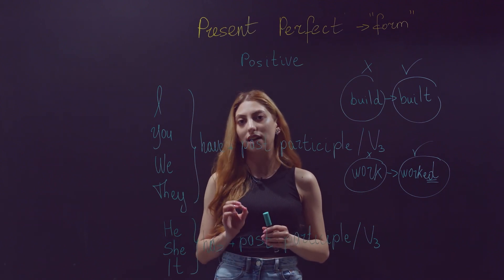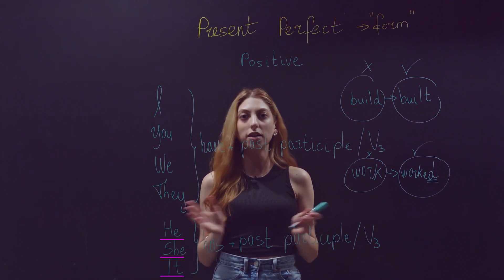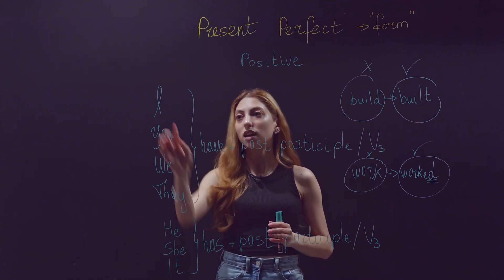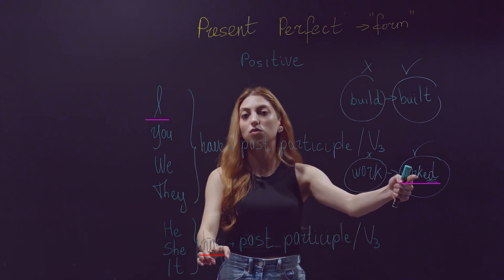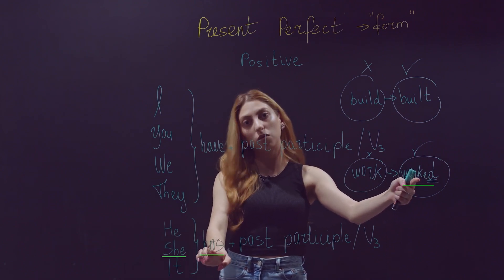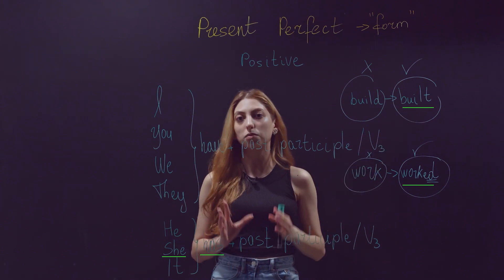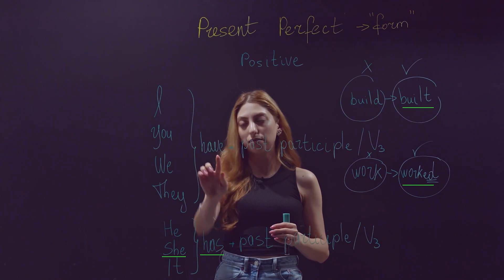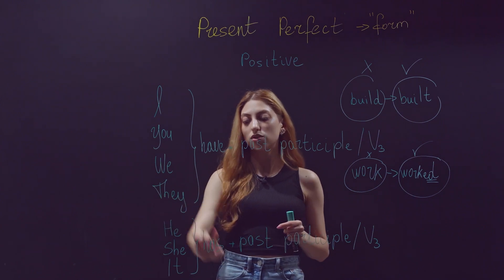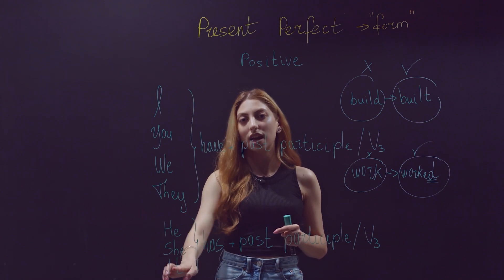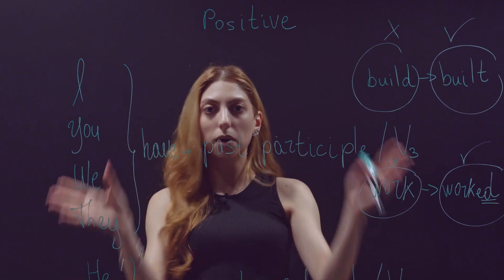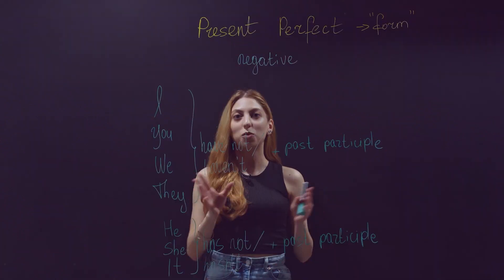We need to remember that we can use 'has' only with 'he', 'she', and 'it' — this is the rule and we must follow it. I can never say 'I has worked' — that is wrong. I need to say 'I have worked', or 'she has worked', or 'she has built'. We use 'have' with: I, you, we, they; and 'has' with: he, she, it — plus past participle, the third form of the verb.